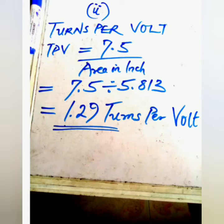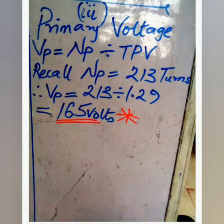Next is turns per volt, derived by the formula: 7.5 divided by area in inches squared, which gives us 7.5 divided by 8.13, equaling 1.29 turns per volt. Next is the primary voltage — the maximum voltage required at the input terminals — derived by NP divided by TpV. NP is the total number of primary turns, which is 213. Our VP equals 165 volts.